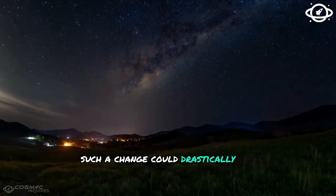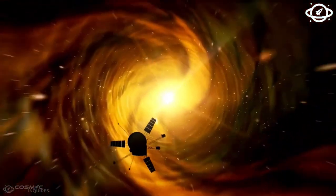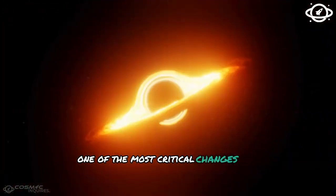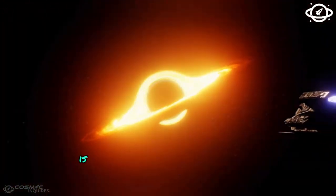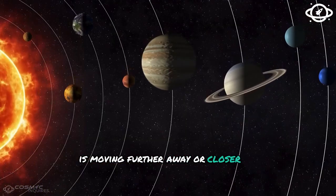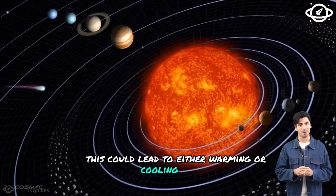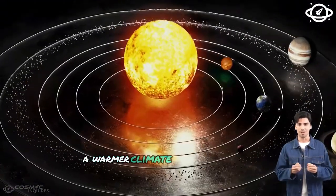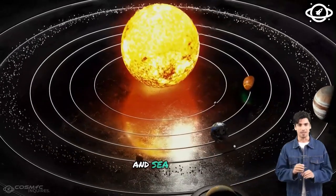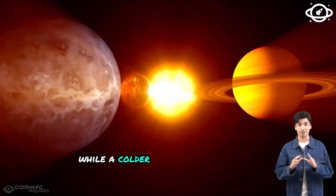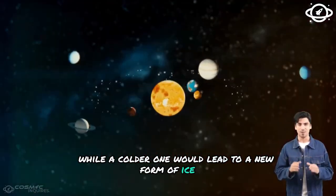Such a change could drastically disrupt the climate on Earth. One of the most critical changes humans can experience is moving further away, or closer to the sun. This could lead to either warming or cooling effects. A warmer climate could make ice caps melt and sea levels rise, while a colder one would lead to a new form of ice age.